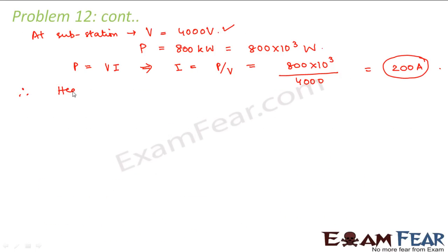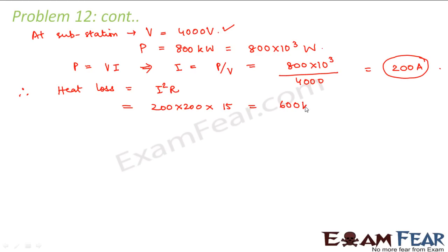Therefore the heat loss is equal to I²R = 200² × 15, which comes out to be 600 kilowatts. This is the total power loss in the form of heat.